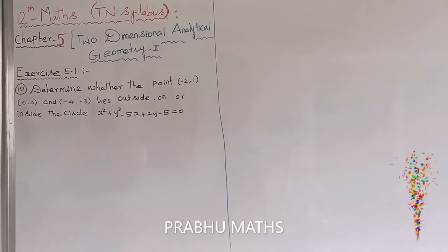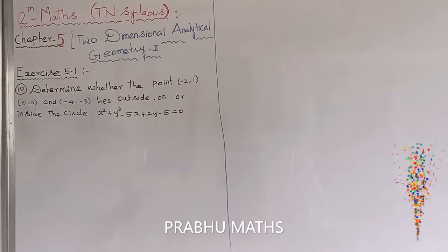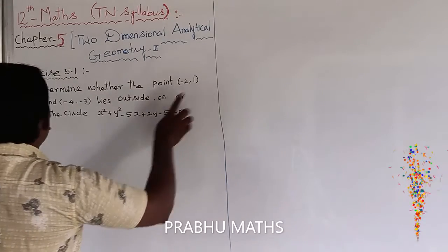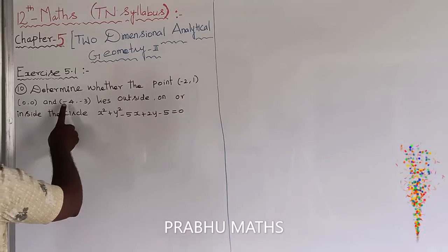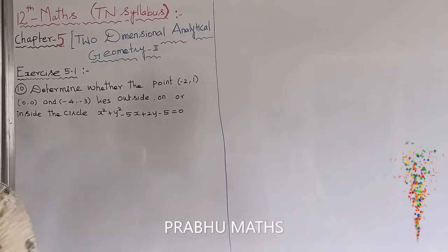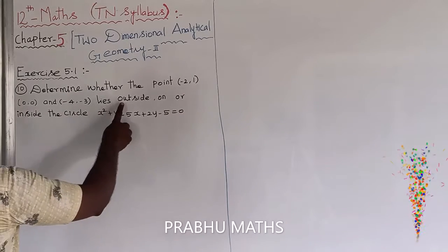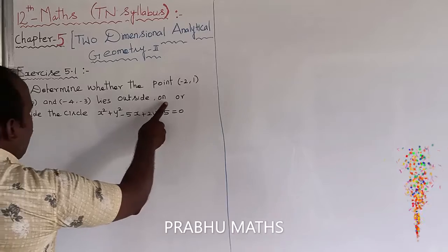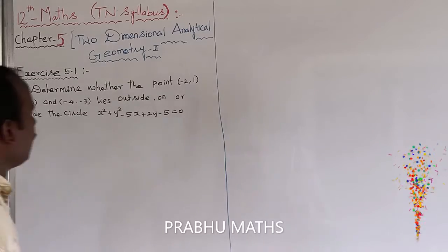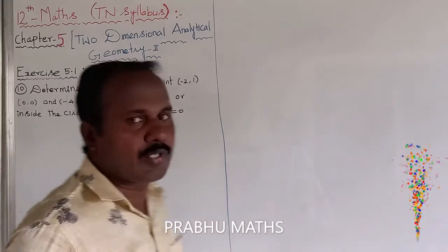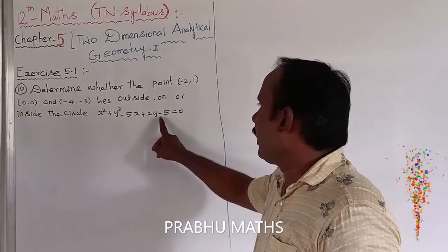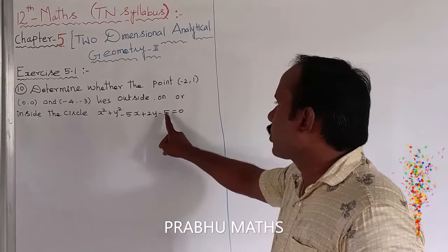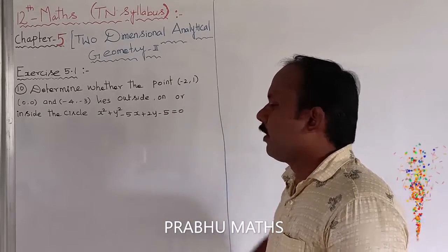Problem 5.1, 10th sum. Determine whether the points minus 2 comma 1, 0 comma 0, and minus 4 comma minus 3 lie outside, on, or inside the circle x squared plus y squared minus 5x plus 2y minus 5 is equal to 0.